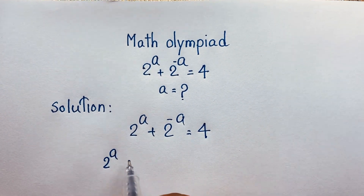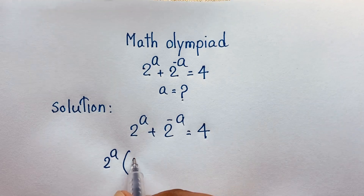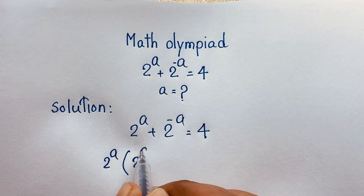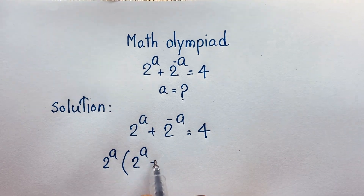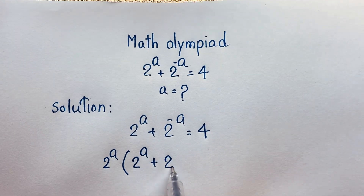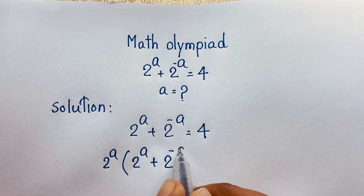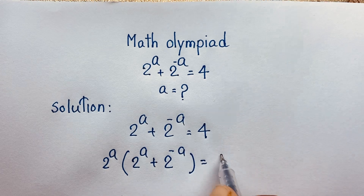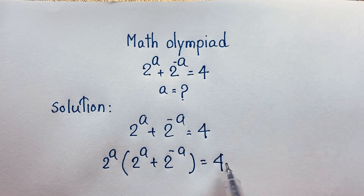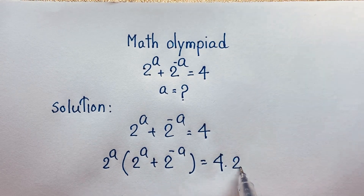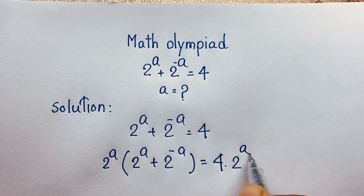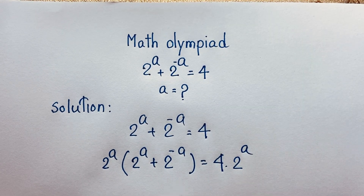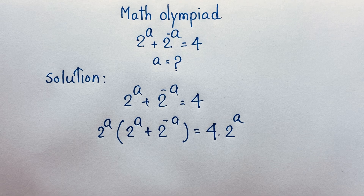So 2 to the power a times 2 to the power a, plus 2 to the power a times 2 to the power negative a, is equal to 4 times 2 to the power a. I multiply both sides by 2 to the power a.